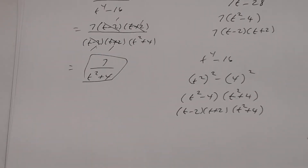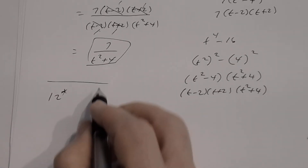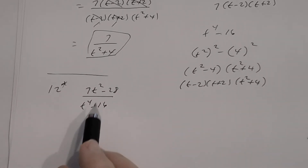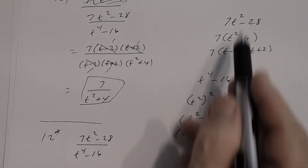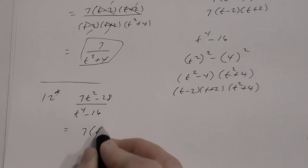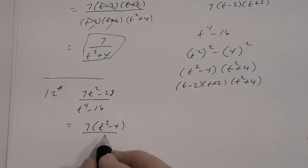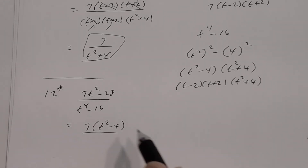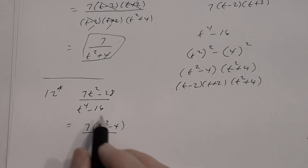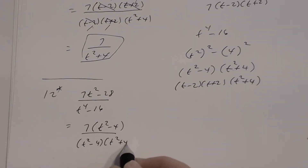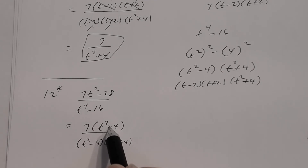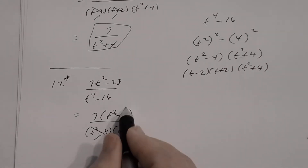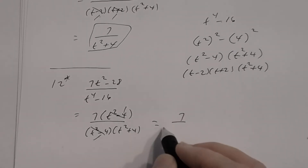An important note for number 12: if you only factored the numerator as 7(t² − 4) without factoring further, that's fine too — because (t² − 4) appears directly in the denominator as a factor and divides out immediately, also giving you 7 divided by (t² + 4). You didn't need to factor all the way down.